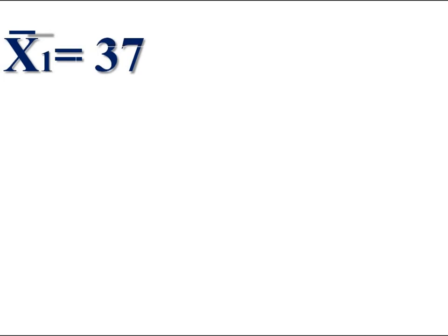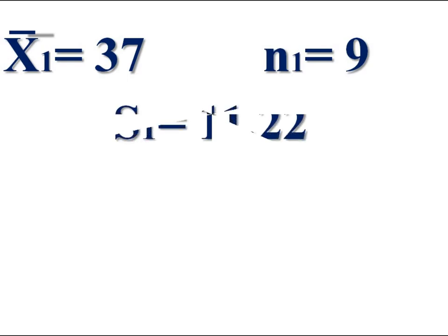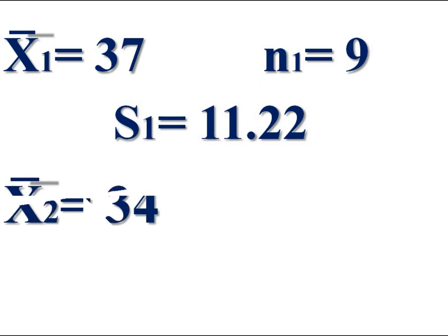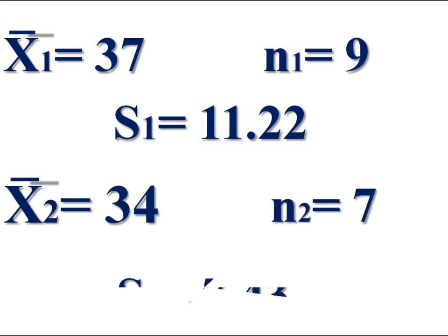Now we have various parameters. X bar 1, mean of first group, is 37. N1, number in first group, is 9. Standard deviation of first group, S1, is 11.22. Second group mean is 34. Second group number, N2, is 7. Second group standard deviation, S2, is 7.43. The total of sample numbers, N1 plus N2, is 16, which is less than 30. Therefore, it is a small sample t-test to apply.